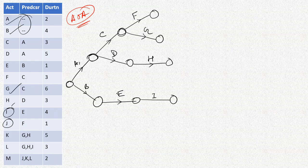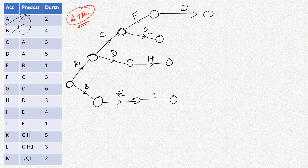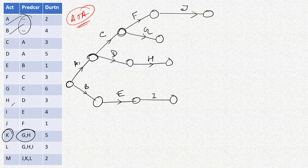Activity J is dependent on F, so we draw activity J here. Activity K is dependent on G and H, so we need a separate node representing completion of both G and H. In the figure, one node represents completion of G and another represents completion of H individually. We use a separate node and join it to the other two nodes by two dummy activities, so this node represents completion of both G and H.